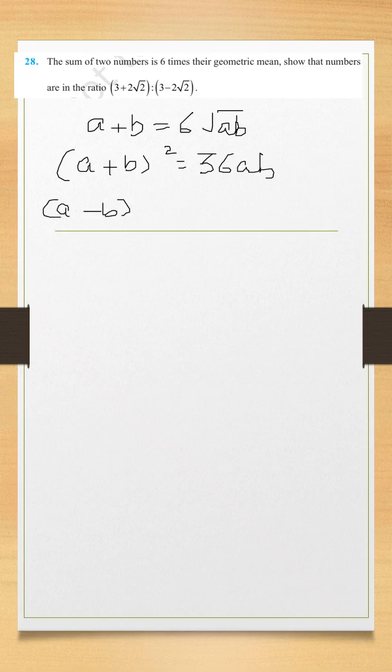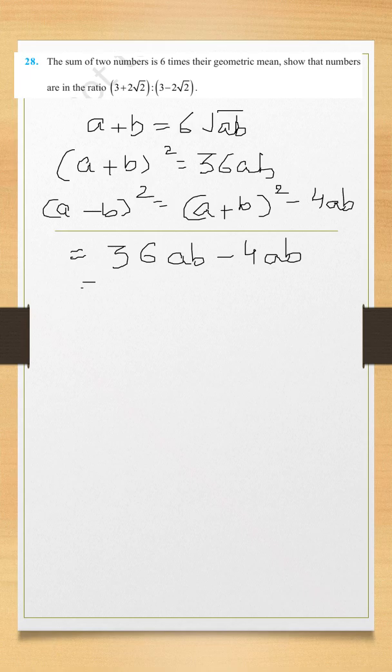A minus B whole square, we can write it. It can be written as A plus B whole square minus 4AB. This can be written as A plus B whole square is 36AB minus 4AB. This is equal to 32AB.